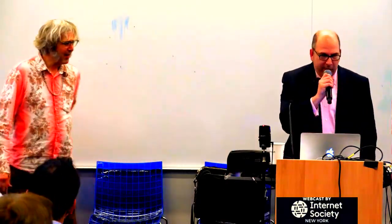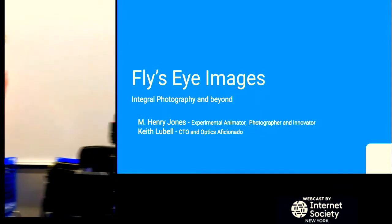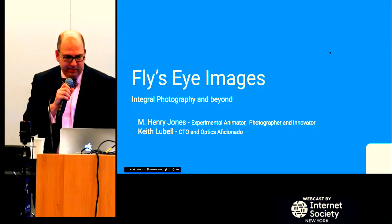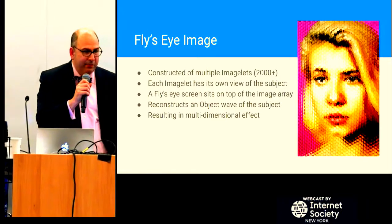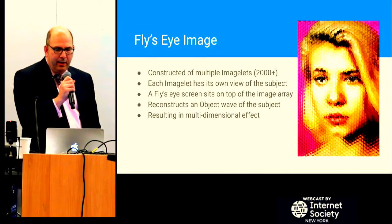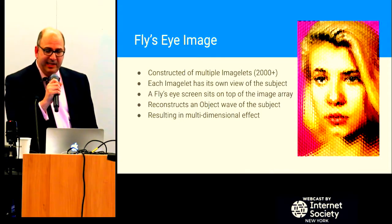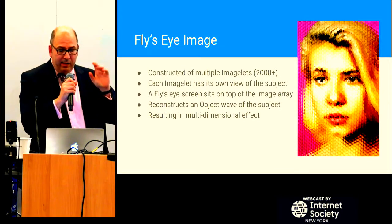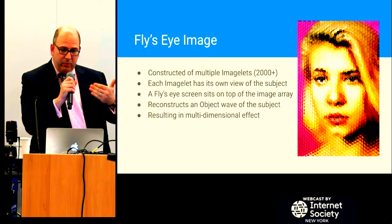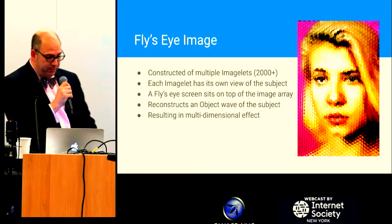Thank you, Henry. And thank you, Natasha, OWASP, and Microsoft for having us here. So here you see the fly's eye image, as you saw out in the hallway. It's constructed of over 2,000 little images — imagelets — and each has a distinct view of the subject. On top of those images sits a lens screen, and together those two things reconstruct an object wave of the subject, resulting in the multidimensional effect that you see.